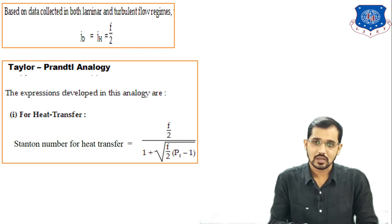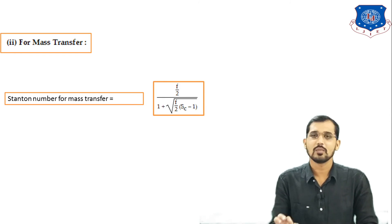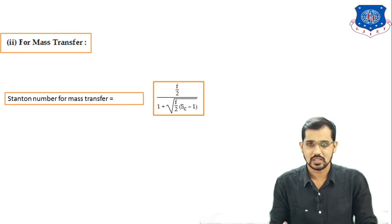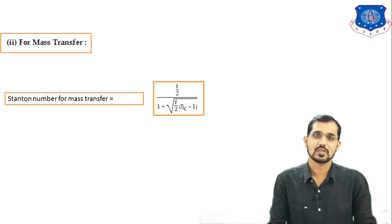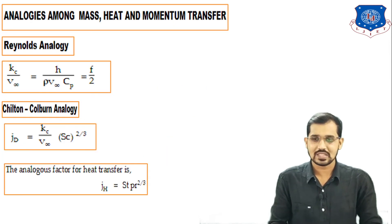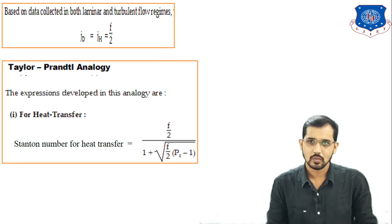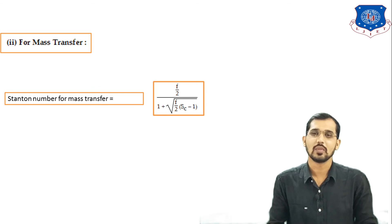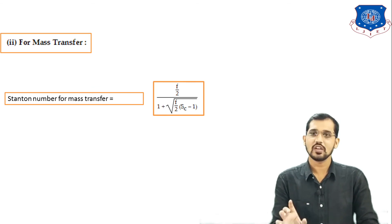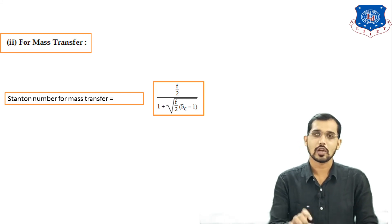The analogous relation for mass transfer is: Stanton number for mass transfer = f/2 divided by [1 + √(f/2)·(Sc − 1)]. The key difference between the heat transfer and mass transfer Stanton number expressions is that the Prandtl number Pr is replaced by the Schmidt number Sc. In mass transfer we deal with Schmidt number; in heat transfer we deal with Prandtl number.